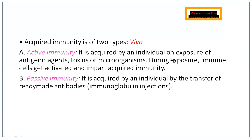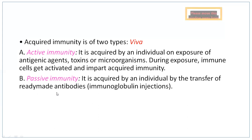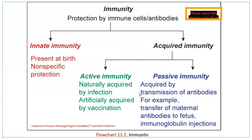During natural exposure, immune cells get activated and give acquired immunity. Passive immunity is acquired by an individual through transfer of ready-made antibodies. The best example is through mother's milk to babies. We also have immunoglobulin injections as an example of passive immunity.